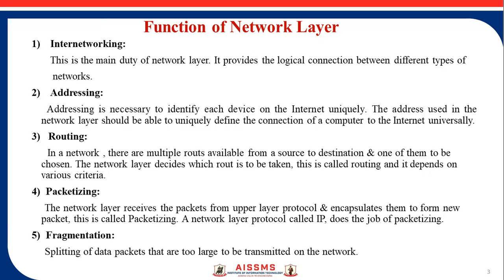The next function is routing. In a network, there are multiple routes available from source to destination, and the important task is to choose one of them. The network layer decides which route is to be taken — this is called routing, and it depends on various criteria. The next function is packetizing. The network layer receives packets from the upper layer and encapsulates them to form a new packet. This is called packetizing, and it is done by the network layer protocol known as IP — Internet Protocol.